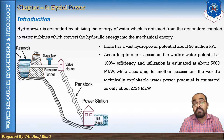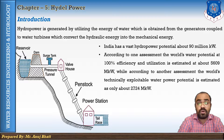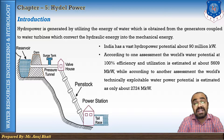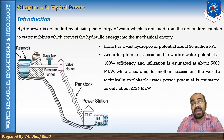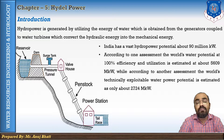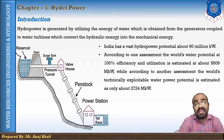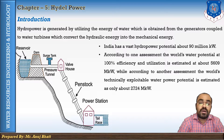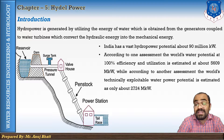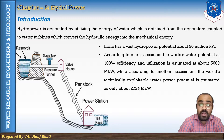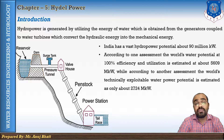Talking about India, India has a vast hydropower potential estimated at about 90 million kilowatt. About 22 percent of this potential is being tapped by various existing and ongoing power schemes. Development of hydropower was an almost insignificant quantity of 0.5 million kilowatt in the pre-independence period, prior to 1947. The installed capacity was about 18.7 million kilowatt in 1993.